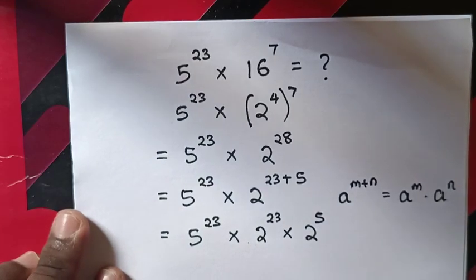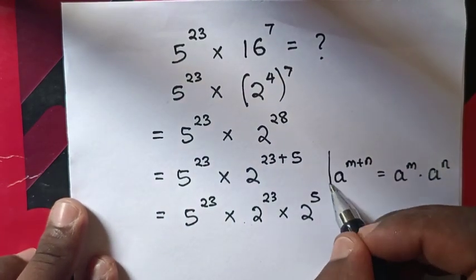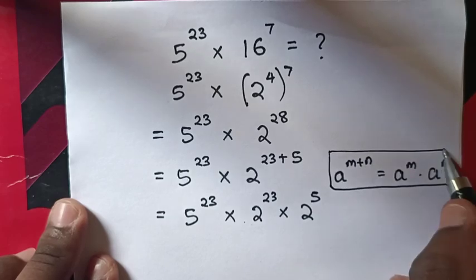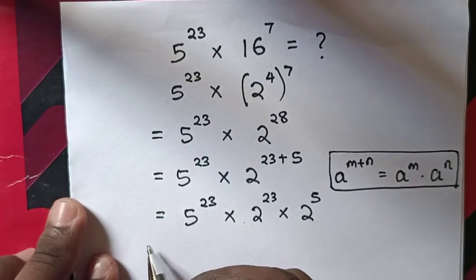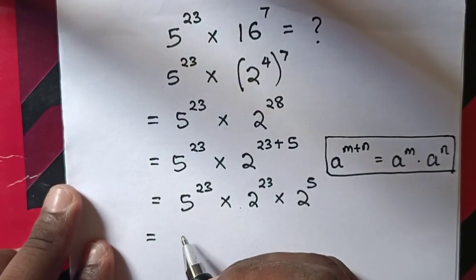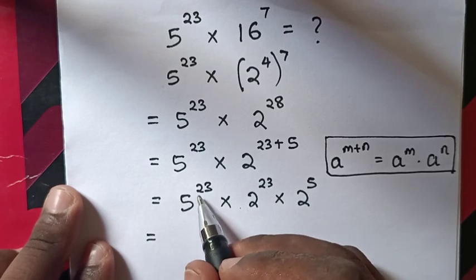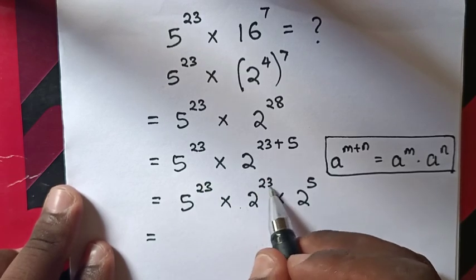This equals 5^23 times 2^23 times 2^5. Now we have 5^23 and 2^23, the same powers.